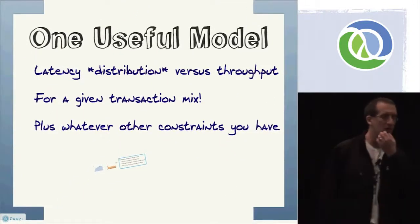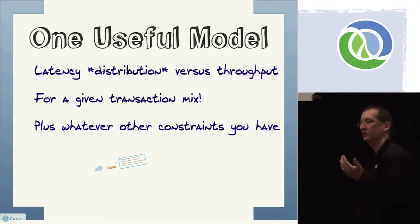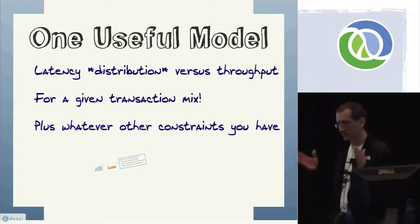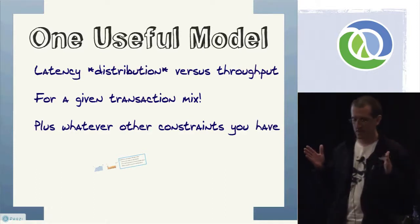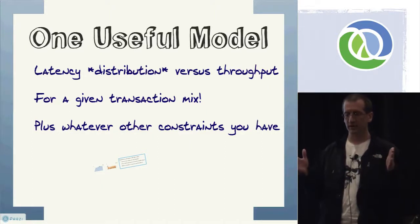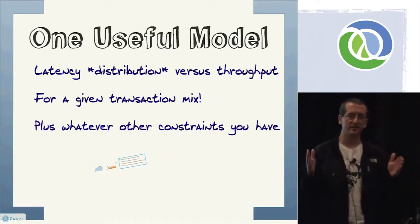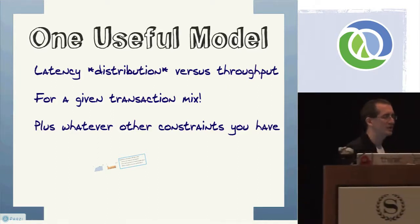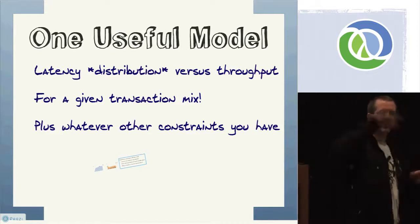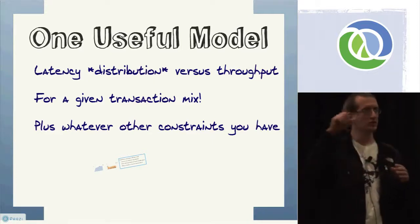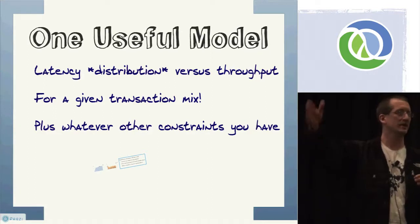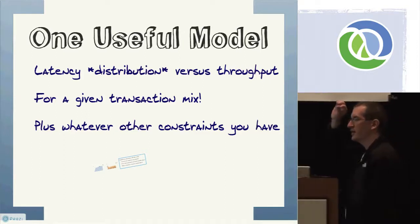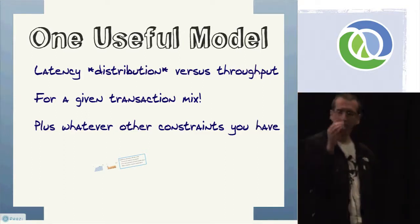There's a model I like to use — really a family of models — when I'm building transactional web systems. I want to characterize the system as: what is the distribution of latencies or response times at a given load? When the system is processing this many requests per second, what is the distribution of latencies — 90% come back in this amount of time, 95% come back in this amount of time, and so on. What's the distribution of response times at a given throughput?